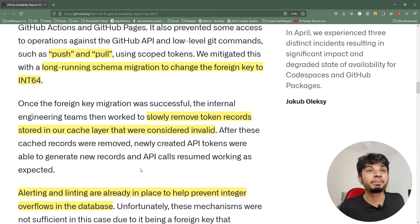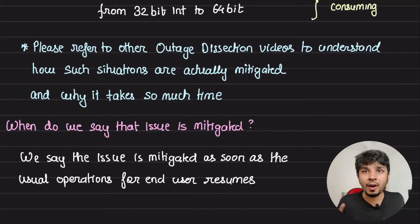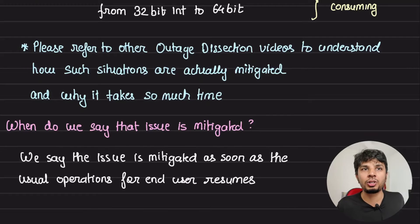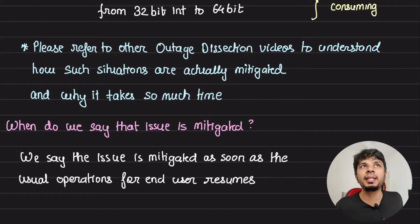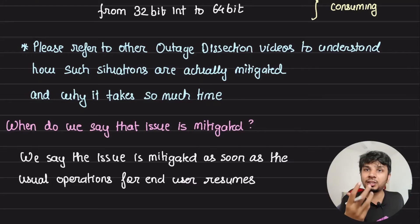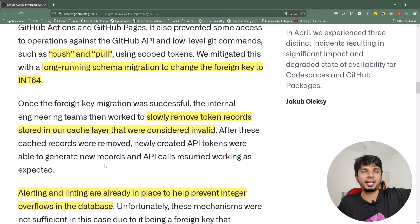That's exactly what GitHub did and everything was fine. If you want to know how to actually perform this migration and what challenges come up, I've covered it in two separate videos under the GitHub outage dissection series — with the exact ways to run the schema migration, why it takes a long time, and three or four approaches to do it quicker. You can watch those videos to understand how the actual mitigation happens.